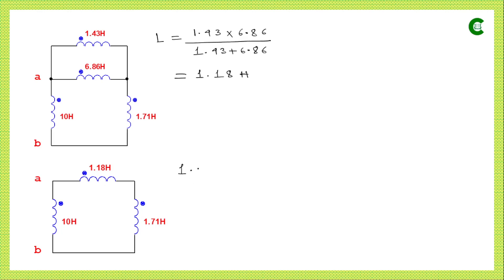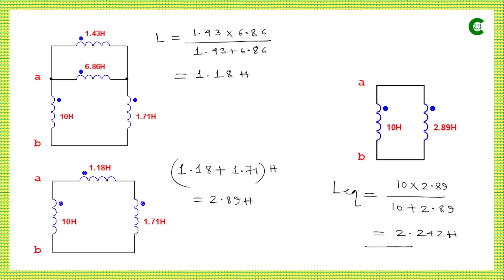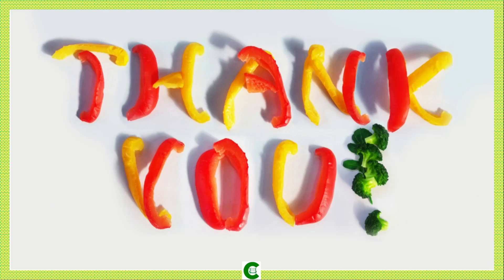The 1.18 Henry inductor and the 1.71 Henry inductor are connected in series, so their equivalent value is 1.18 + 1.71 = 2.89 Henry. In the final modified circuit, this inductor and the remaining inductor are connected in parallel across points A and B — the points across which we need the equivalent inductance. Simplifying these two parallel inductors: (10 × 2.89) / (10 + 2.89) = 2.242 Henry. This is the equivalent inductance of the whole inductive circuit. I hope this class was meaningful for you, thank you.